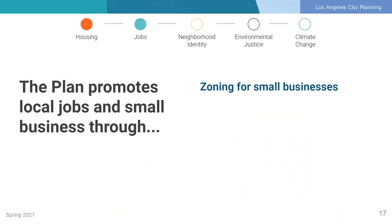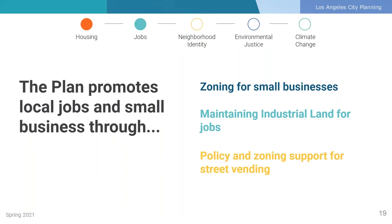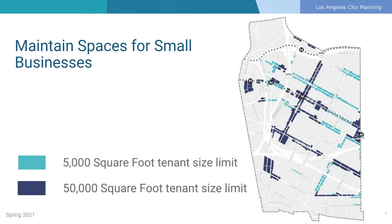In addition to accessible and affordable housing for all residents of Boyle Heights, access to good local jobs has been a recurring theme throughout the plan update process. Small businesses have been a part of the Boyle Heights culture and legacy for over a century, and existing businesses are an asset to the community and to the region. The proposed plan highlights the community's diverse economy and promotes local jobs and small business through zoning for small businesses, maintaining industrial land for jobs, and provides policy and zoning support for street vending, recognizing its vital role in the local economy for local entrepreneurs. In order to protect existing locally owned businesses and better support new entrepreneurs, the plan maximizes opportunities for small business by limiting the size of new commercial tenant spaces on certain corridors throughout the neighborhood.